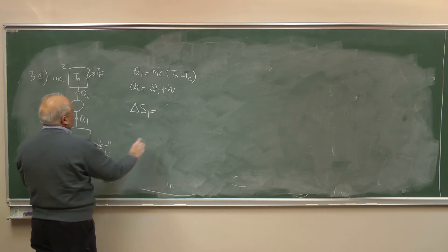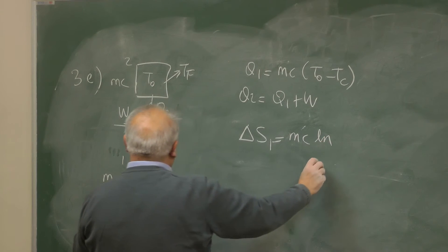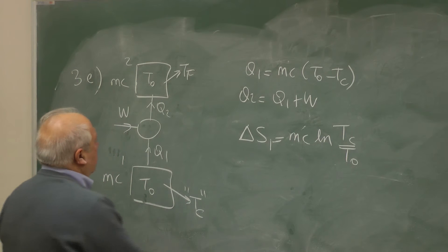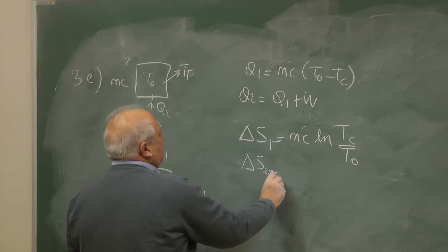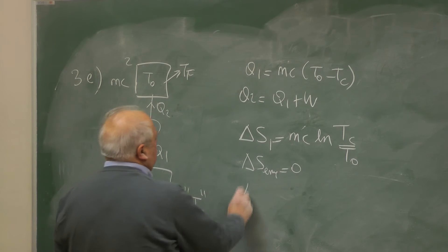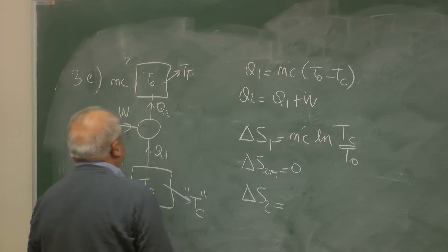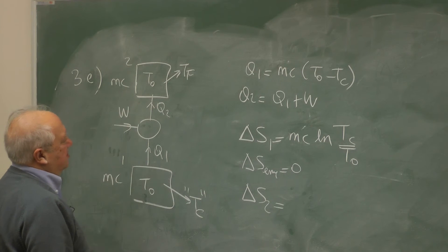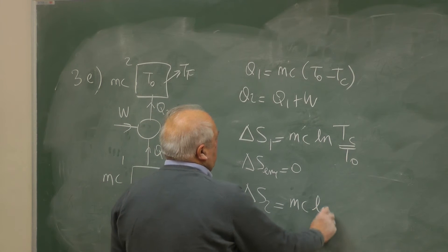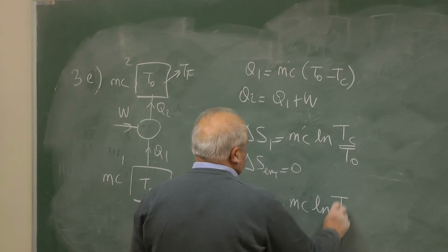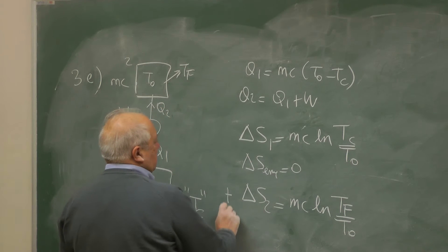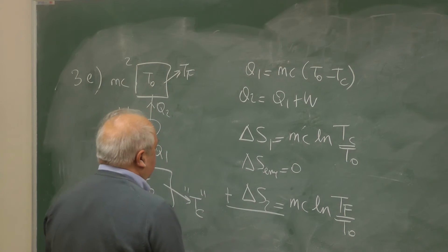Delta S1 equals MC times log(Tc over T0). Delta S2: it's not a reservoir, so we are putting it bit by bit, keeping it in equilibrium. So it is MC times log(Tf over T0). The totality, delta S total, will be 0.